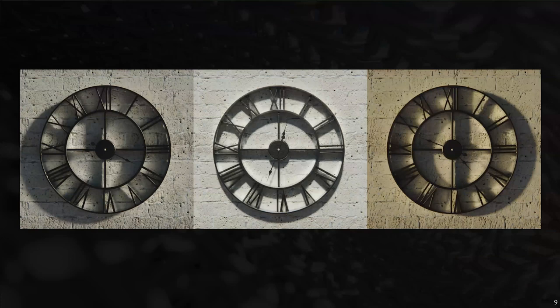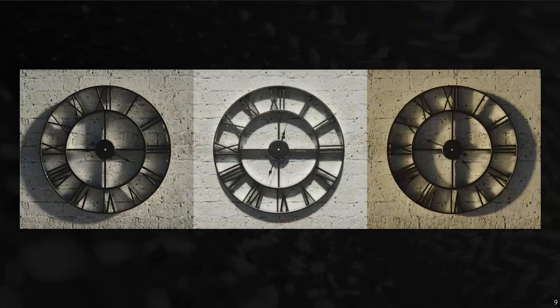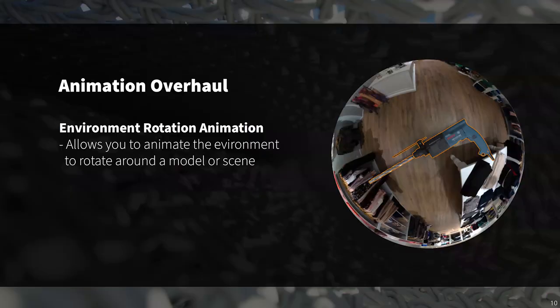The animation simulates time passing from sunrise to sunset — not only causing a shift in shadow location but also a shift in color temperature. I think this is going to be an awesome tool for architectural and vehicle renderings and will definitely add a level of realism to many product applications. Also very useful is the new environment rotation animation, which allows you to apply a rotation animation to any environment you've applied or created.